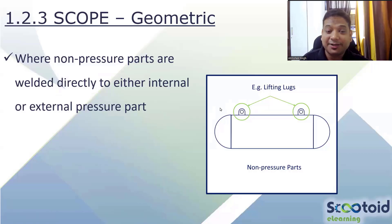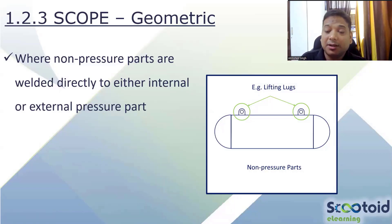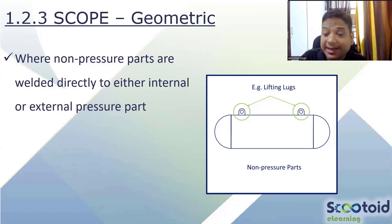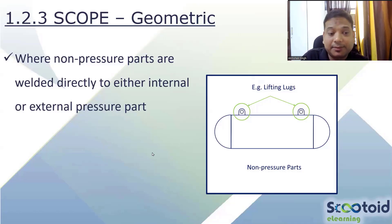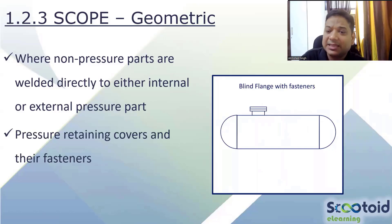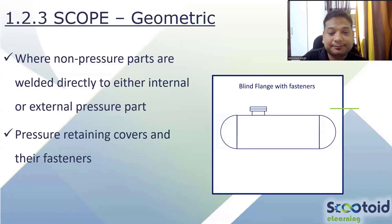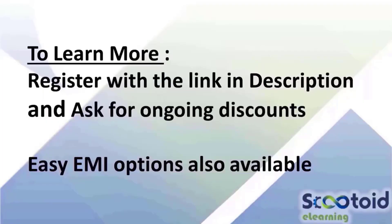If any part — internal or external — is directly welded to the pressure vessel, it falls within the pressure vessel's scope and must follow the same rules as pressure parts. For a blind flange with fasteners, both the blind flange and fasteners are included within the code's scope. The cover also falls within scope. To learn more about these topics, register with the link in the description.